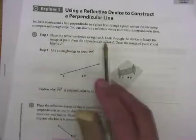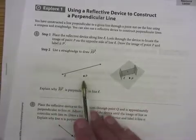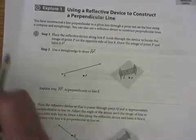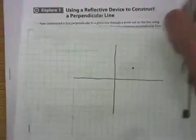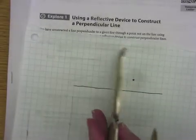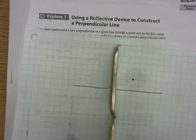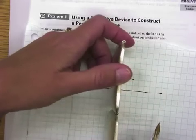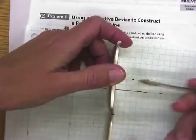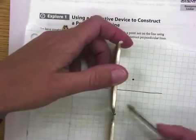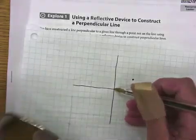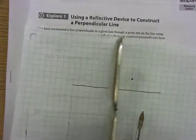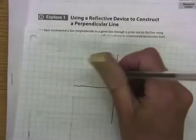The first thing it says is place the reflective device along line L and look through the device to locate the image of point P on the opposite side of line L. Since I'm using a mirror rather than this convenient device, I'm doing it on the coordinate grid. I'm lining my mirror up with my y-axis. When I look through my mirror, I see that its image, the reflection of this point, is three spaces to the left of the origin and two spaces up.